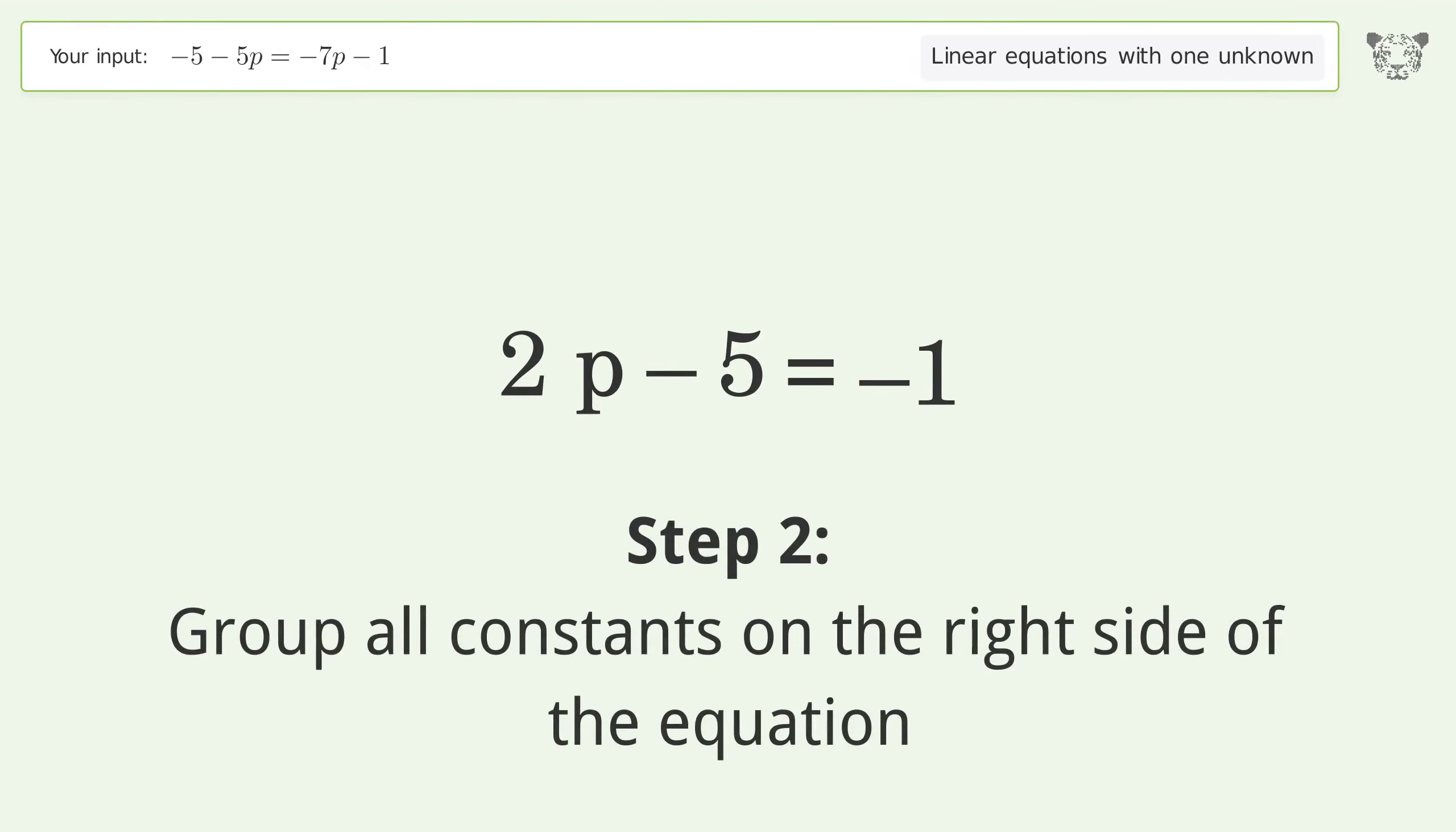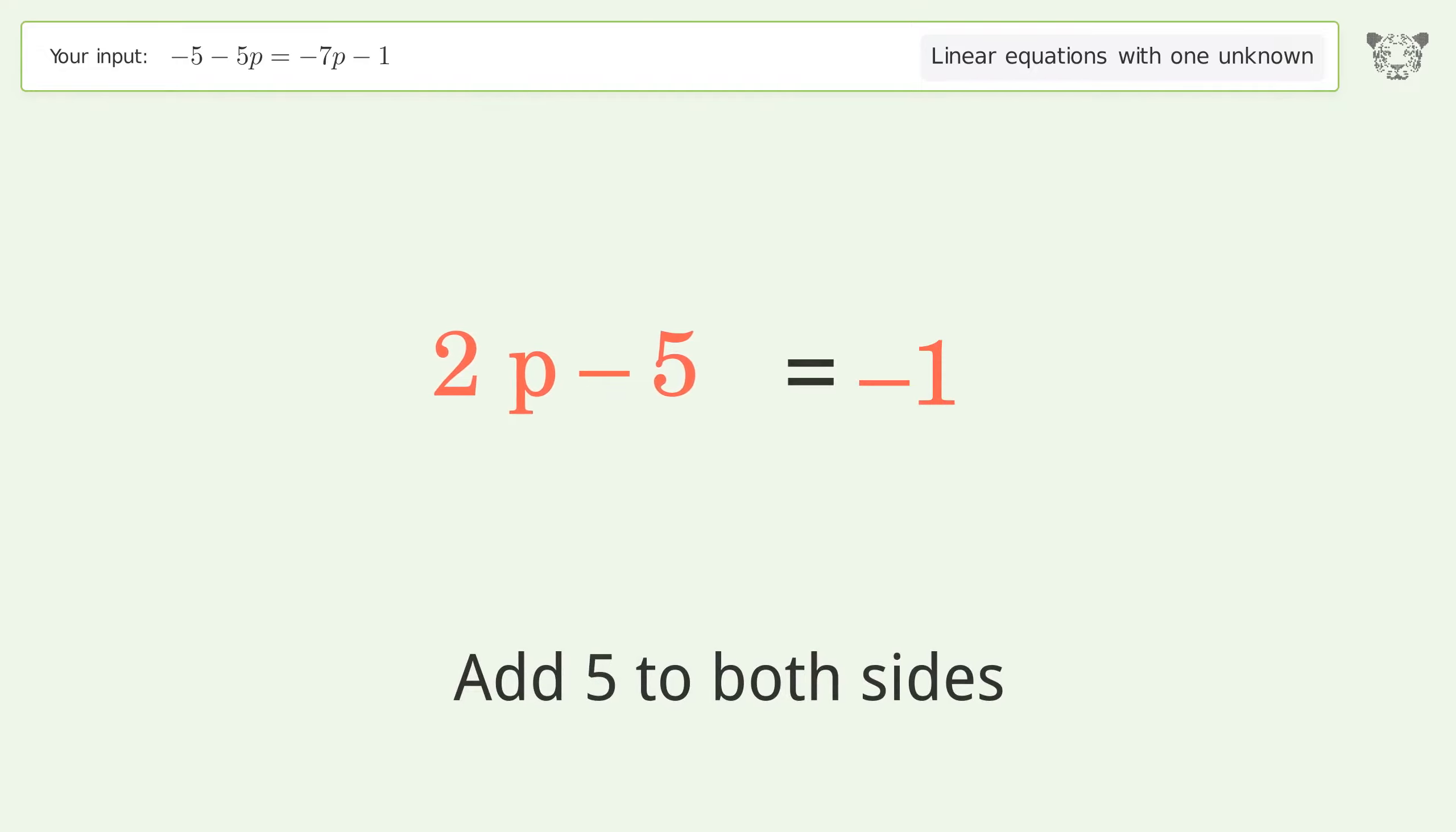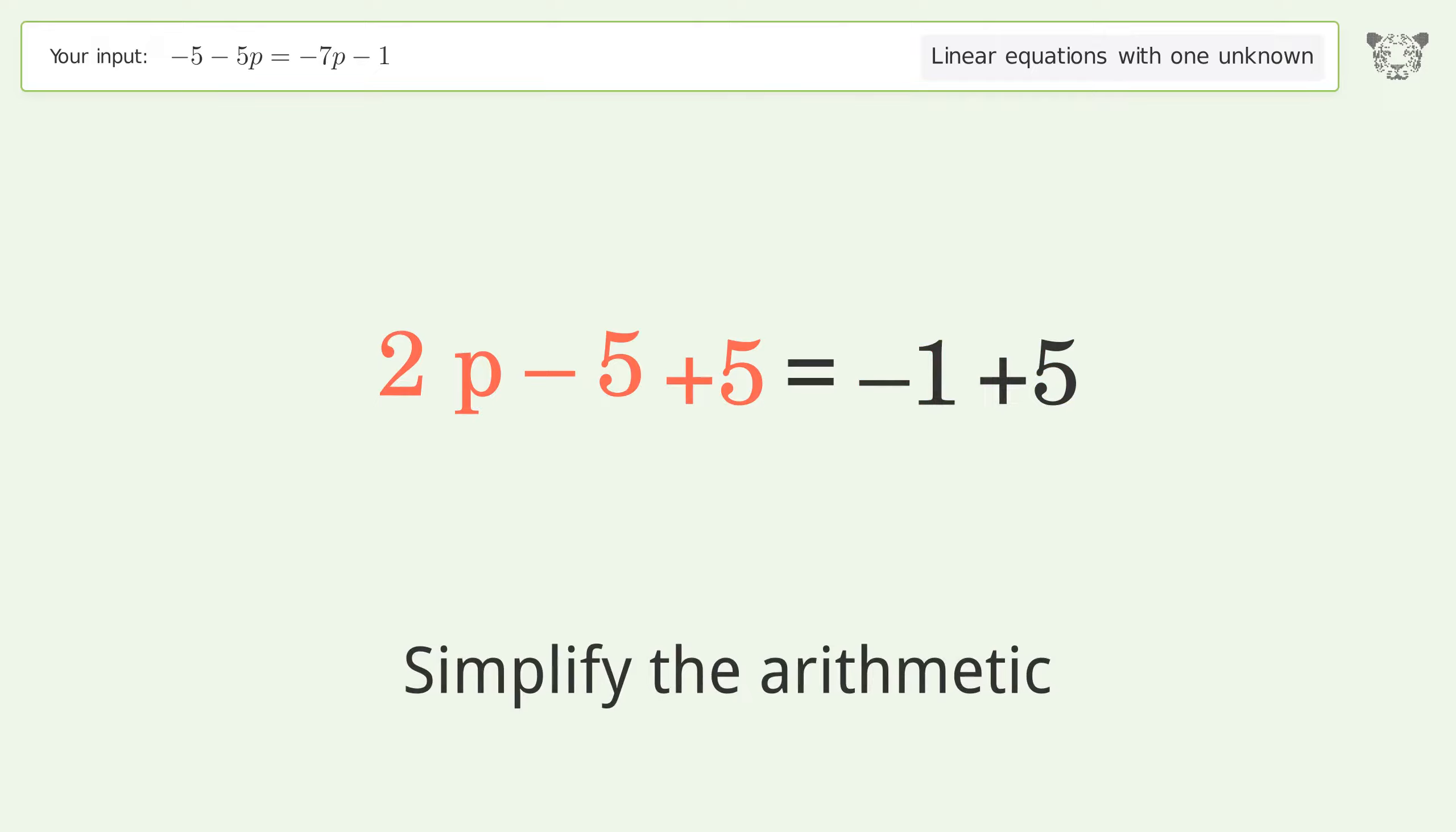Group all constants on the right side of the equation. Add 5 to both sides. Simplify the arithmetic.